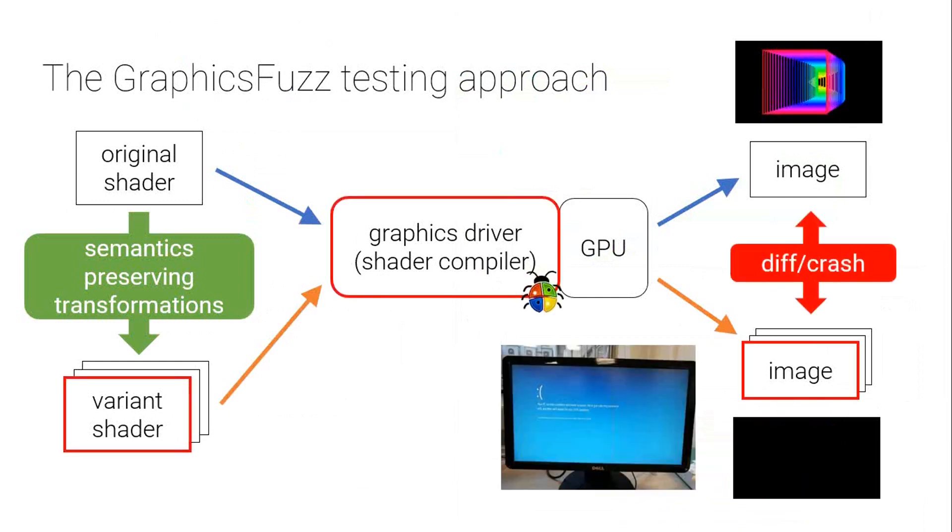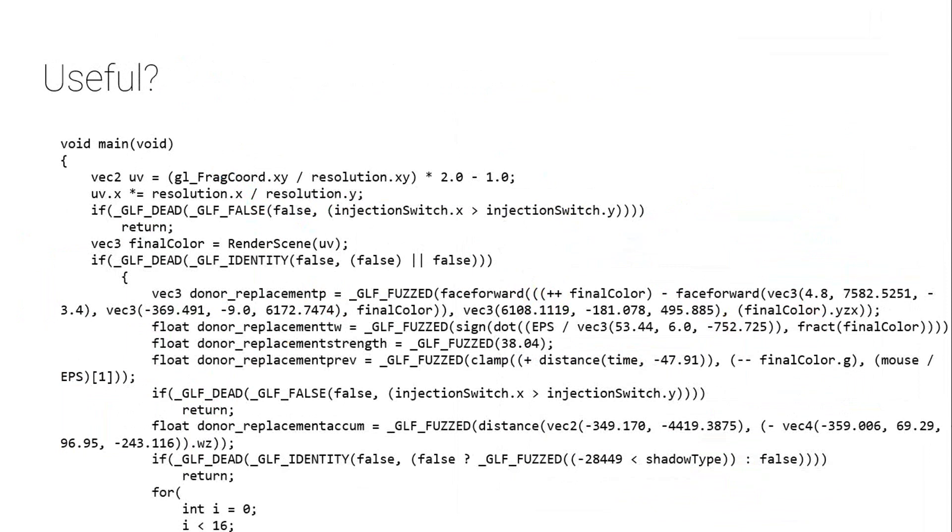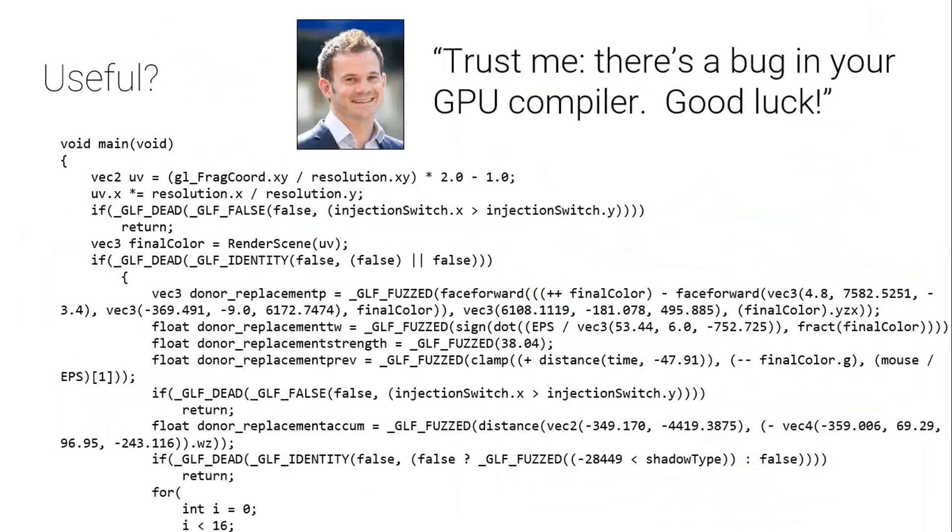And we can use some simple computer vision algorithms to check whether the images are drastically different versus just a tiny bit different. So we should get the same images coming out for all of these shaders. But if instead we get a wrong image, like a black image, when we should have got this pretty image of squares at the top, or some problem like our machine blue screening, which does actually happen because graphics drivers really run close to the kernel, then we know there's a bug in the graphics stack. It could be in the compiler driver or the hardware itself. So then what we do is we present this mutated program to a compiler engineer, and we say to them, there's a bug in your compiler, trust me, and good luck. And they say, go away, right? Because it's probably a bug in this program. It's probably not semantics-preserving, or they didn't believe me.